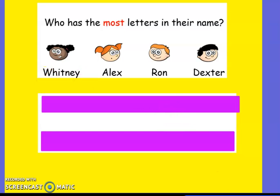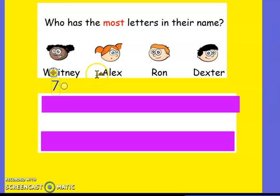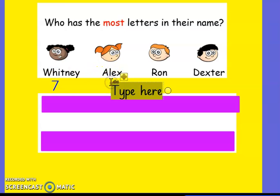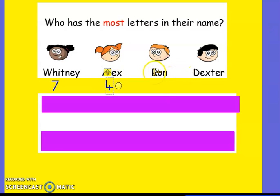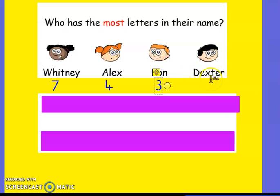Whitney has one, two, three, four, five, six, seven. She's got seven letters in her name. Let's write that down so we don't forget. Seven. Alex has got one, two, three, four letters. Ron has got one, two, three letters. And Dexter has got one, two, three, four, five, six letters.